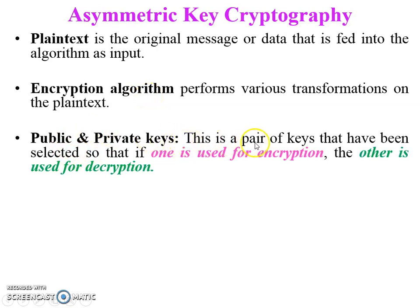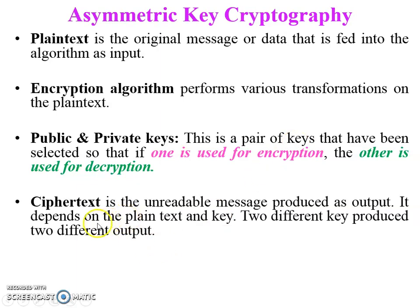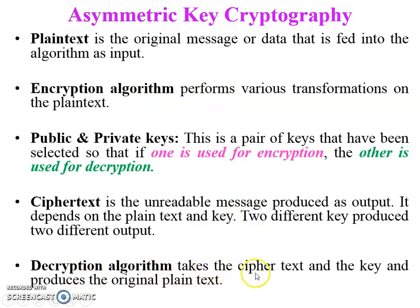Public and private keys are a pair of keys selected so that if one is used for encryption, the other is used for decryption. Either the public key is used for encryption and the private key for decryption, or the private key is used for encryption and the public key for decryption. Ciphertext is the unreadable message produced by the encryption algorithm. The decryption algorithm takes the ciphertext and a key as input and produces the original plaintext. Encryption is executed at the sender side and decryption at the receiver side.